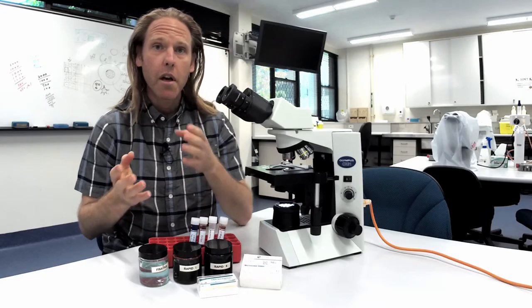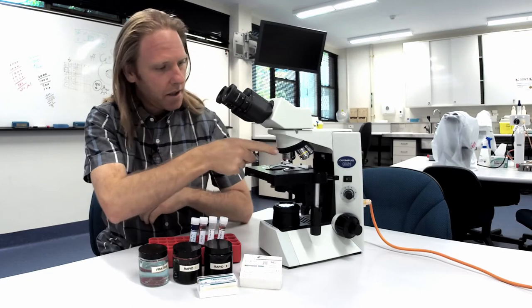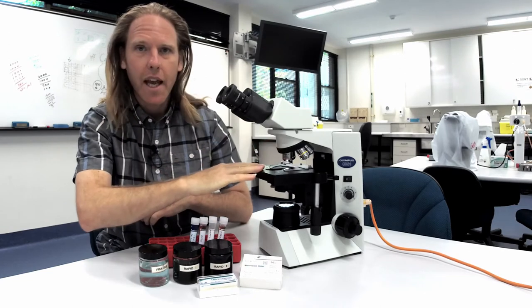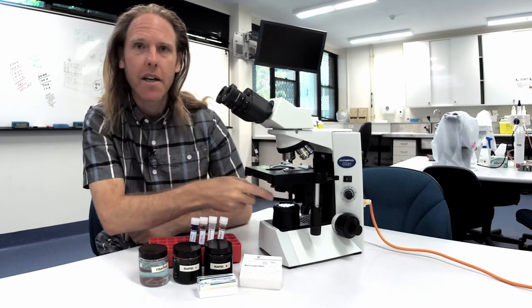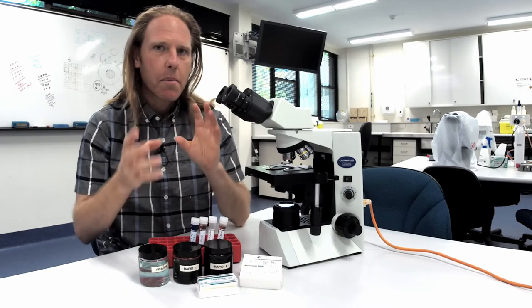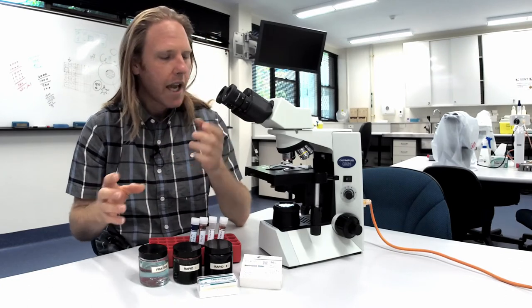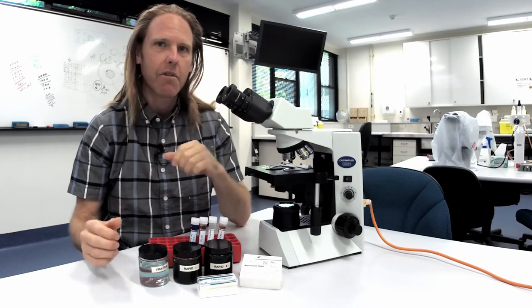With your microscope the basics of any scope are the eyepieces, objective lenses, the stage and the condenser and aperture. Now each of these needs to be adjusted to get the most out of your image and each of these parts needs to be cleaned regularly and often.